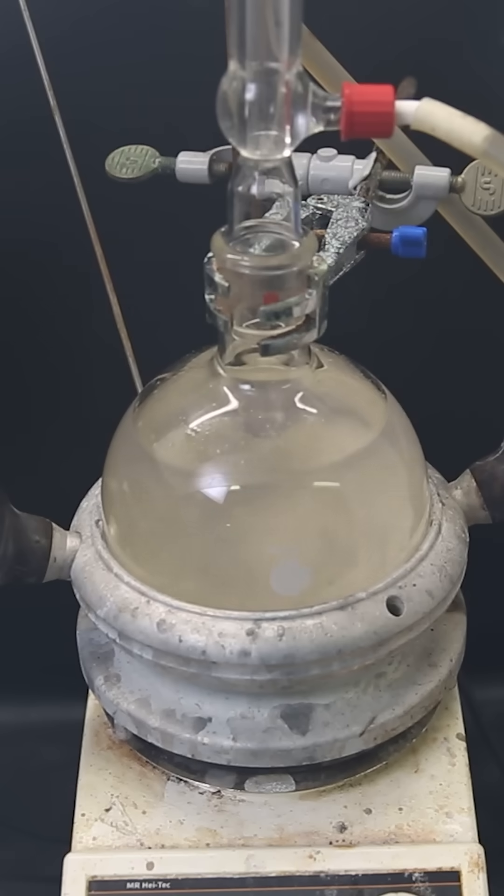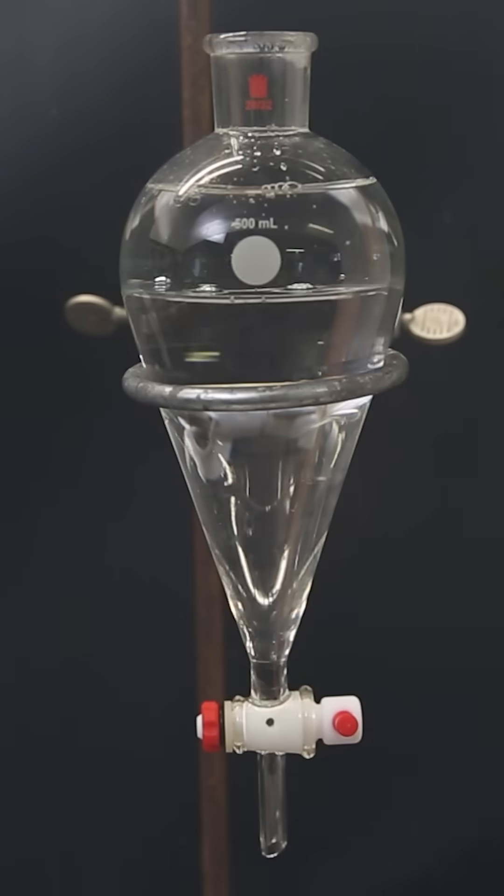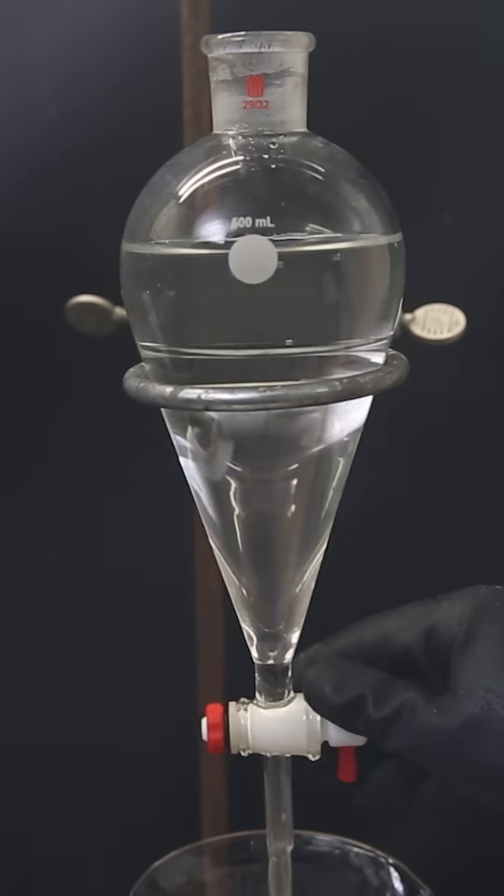After refluxing it overnight, the flakes have turned brown. I then move it to a separatory funnel and wash it with water to remove remaining potassium hydroxide.